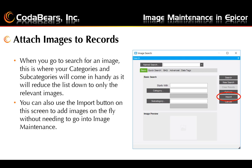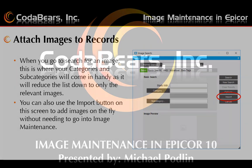The import button works very similarly to the Image Maintenance screen. You'll browse out, grab your image file, select a category and subcategory, and it will attach it to the record in Epicor and also add the image to the E10 database. This is handy if you have a single image for an employee record that you just need to quickly add, or a brand new part.